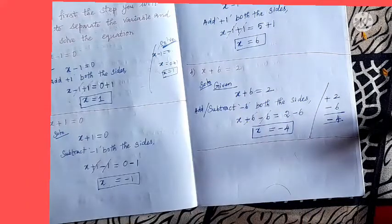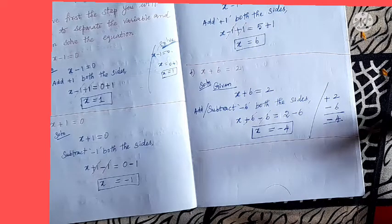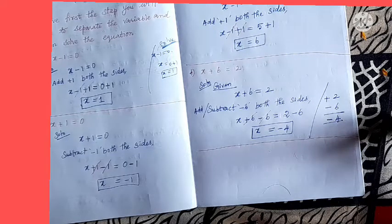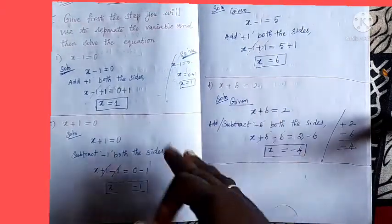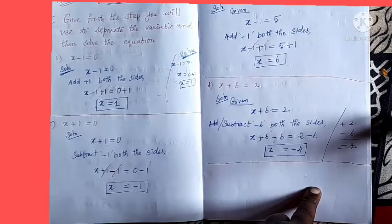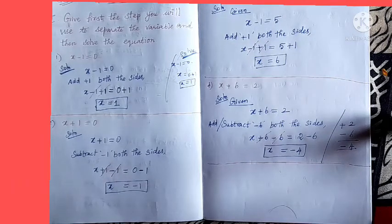Now in your math book, page number 86, exercise 4.2, first roman numeral — problems e, f, g, and h — there are four sums remaining. You need to complete those four sums. The method remains the same. Complete them and send it to my number. Thank you children, have a nice day!